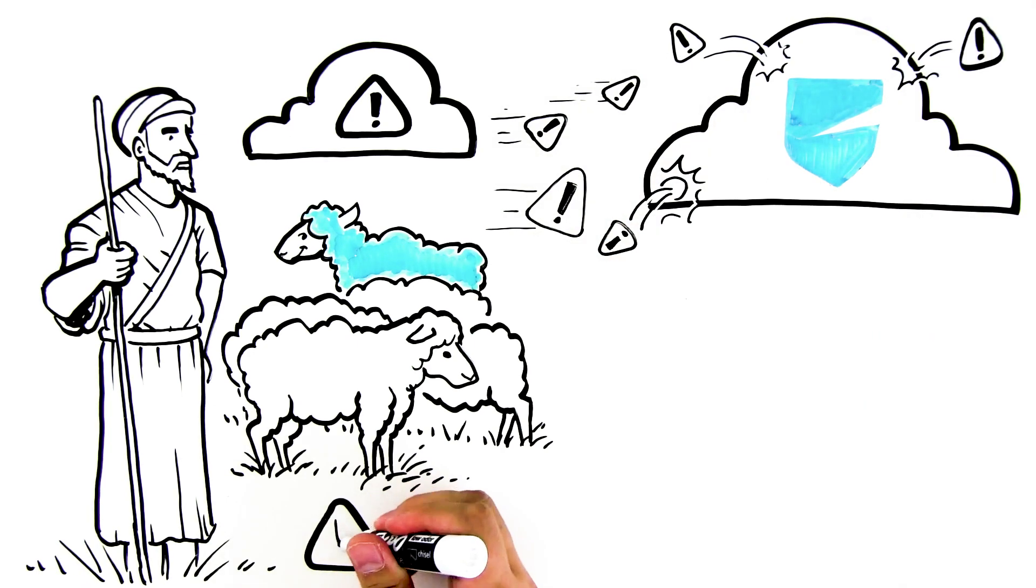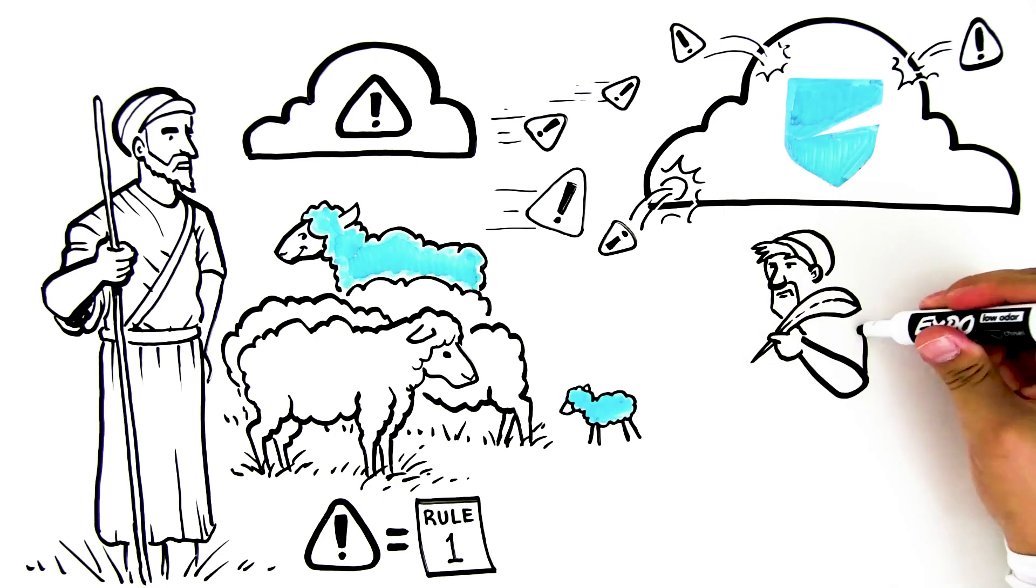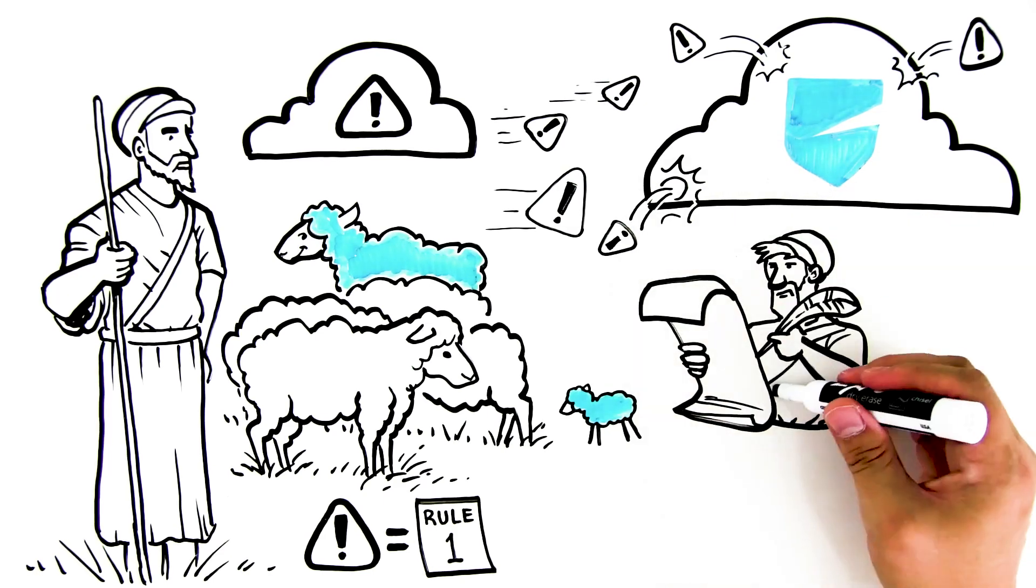Other security companies try to write rules to single out each irregularity. If an unexpected blue sheep appears, the shepherd must write a new rule to trigger an alert.